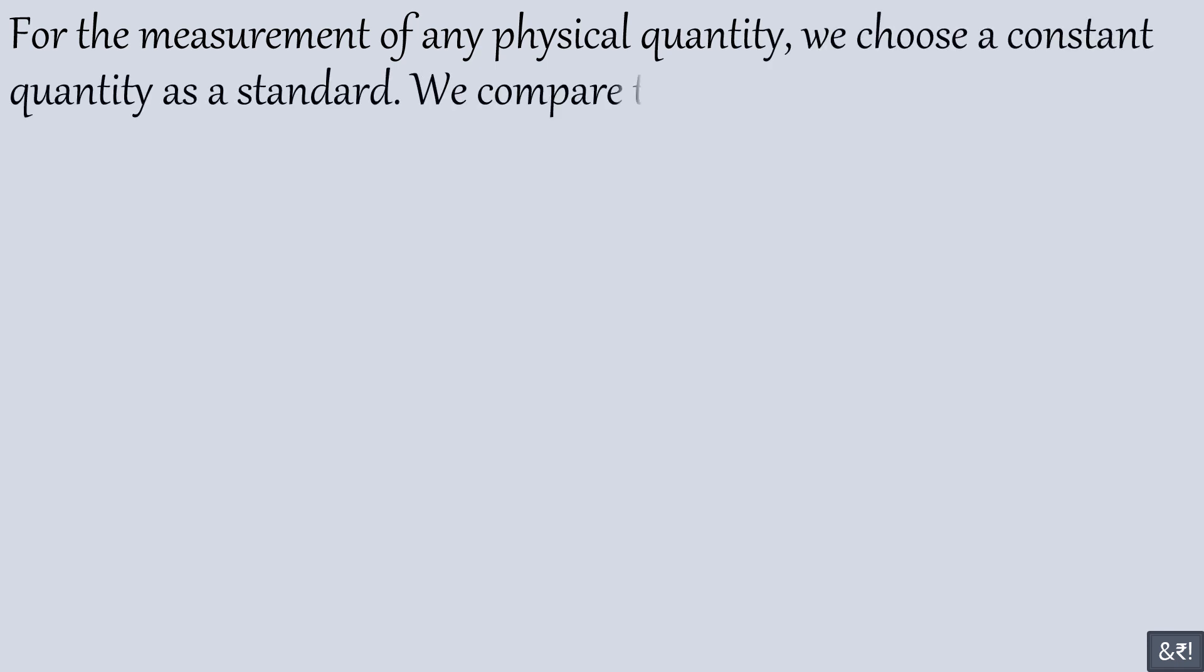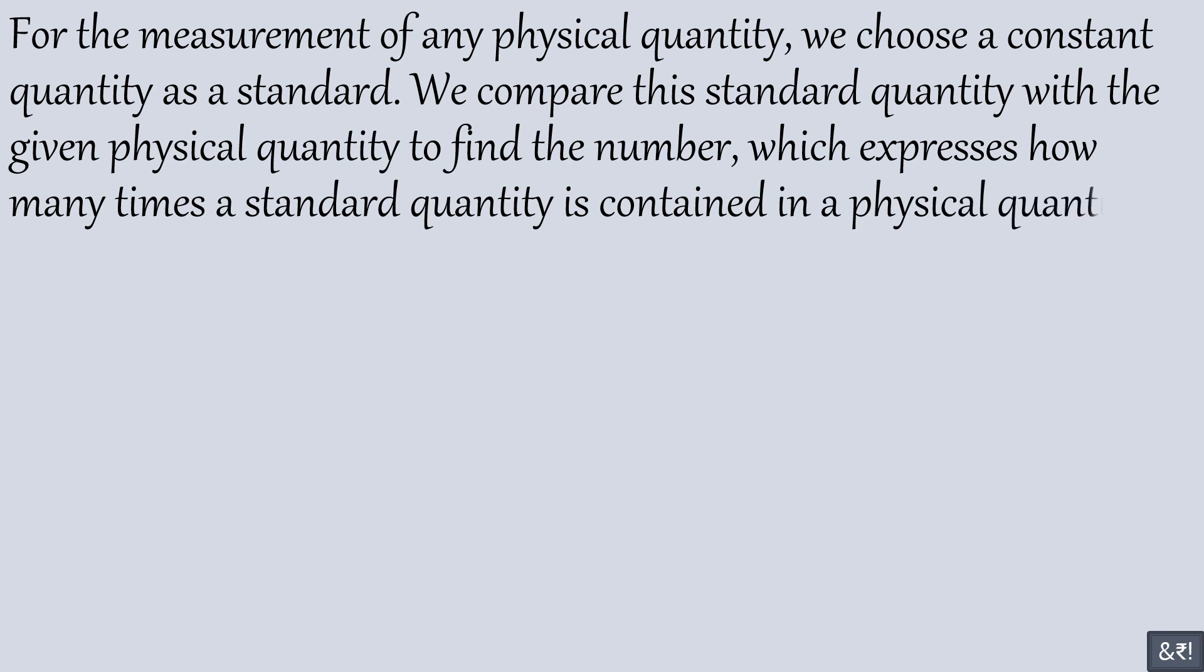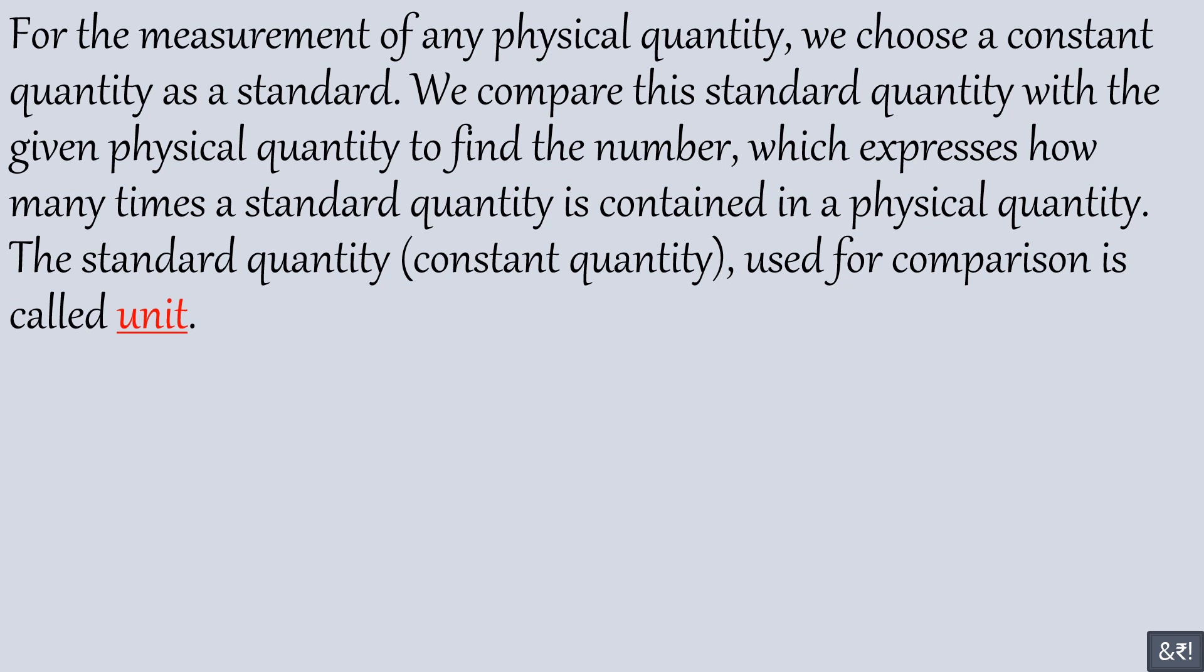For the measurement of any physical quantity, we choose a constant quantity as a standard. We compare this standard quantity with the given physical quantity to find the number which expresses how many times a standard quantity is contained in a physical quantity. The standard quantity used for comparison is called unit.